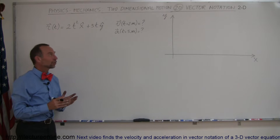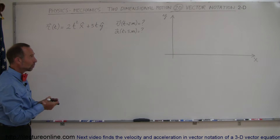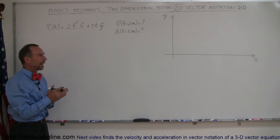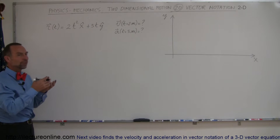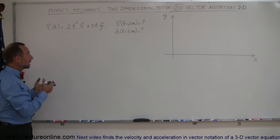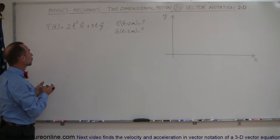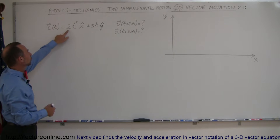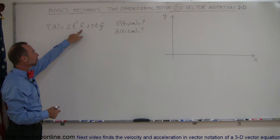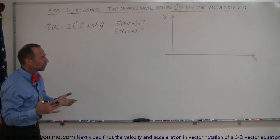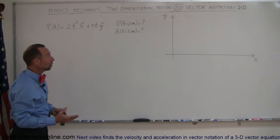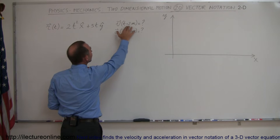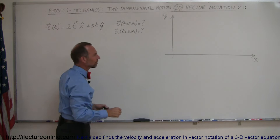Welcome to ElectronLine. Here's another topic in two-dimensional motion dealing with vector notation. We are able to describe two-dimensional or even three-dimensional motion using vector notation. Here we have a position vector as a function of time equal to 2t² in the x direction plus 5t in the y direction. They want you to find the velocity vector at t equals 2 seconds and the acceleration vector at t equals 5 seconds.